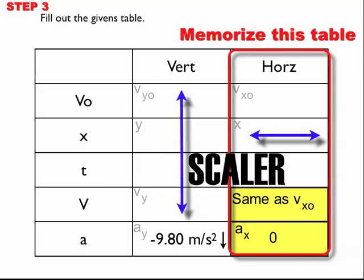And that's going to be true for all of our problems. So horizontally, the final velocity is always going to be the same as the initial velocity for our problems. And for our problems horizontally, the horizontal acceleration is always going to be zero.